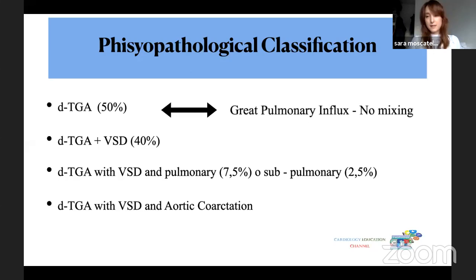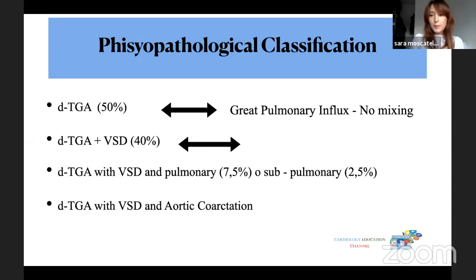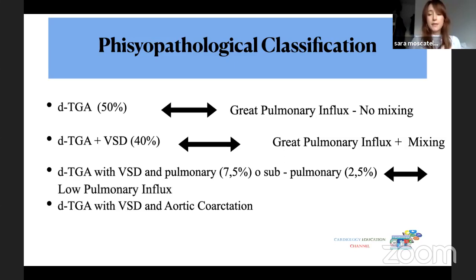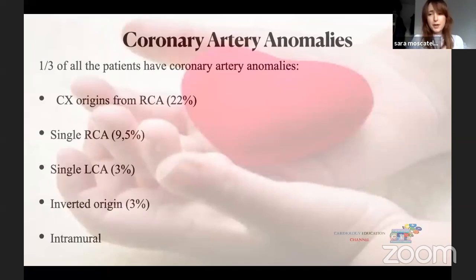This anatomical classification corresponds to a pathophysiological classification. In simple TGA, there is increased pulmonary blood flow with no mixing. In the second type, there is also increased pulmonary flow but with a point of mixing. In the third type, pulmonary flow is lower due to stenosis at the level of the pulmonary artery.